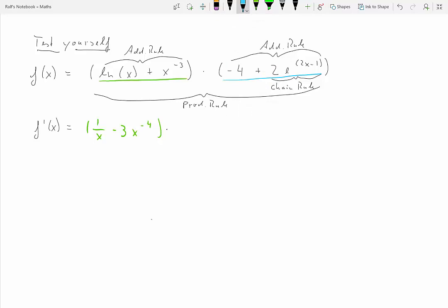And then we multiply just the blue function. Okay, remember the product rule. Negative 4 plus 2e to the 2x minus 1. So for the product rule we now have plus. And what we need to add is just the green function. So it will be the log of x plus x to the negative 3.